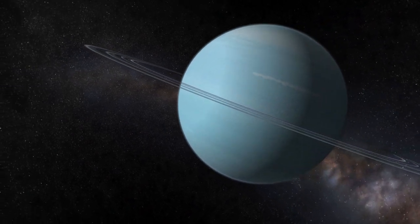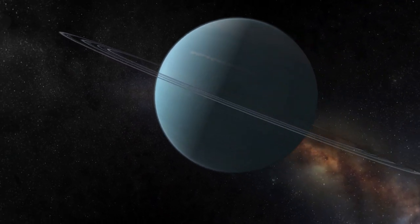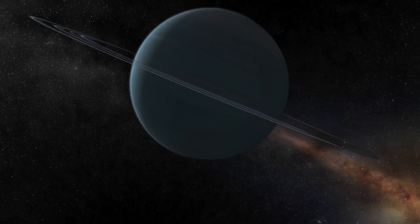Under Ganymede's icy surface, researchers have spotted strange bumps. These amorphous masses may represent rock formations that have been supported for billions of years by Ganymede's icy cover.